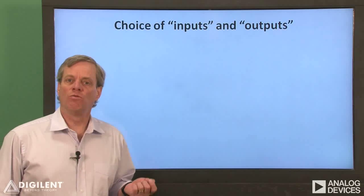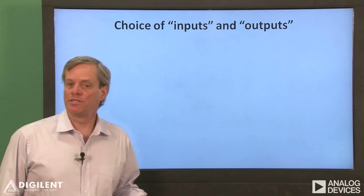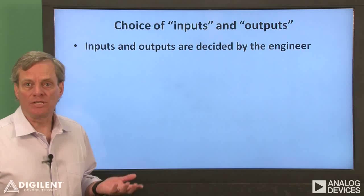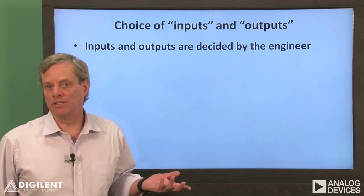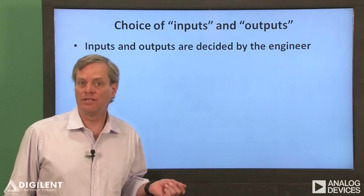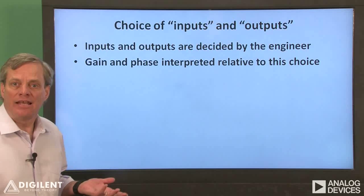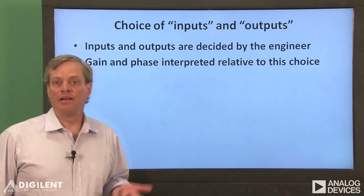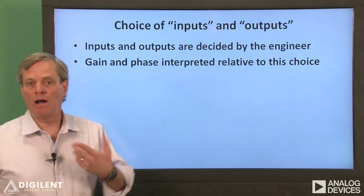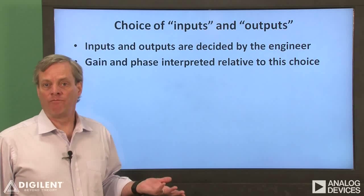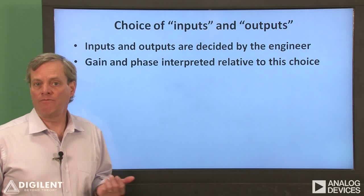Now I want to talk about choosing what we consider to be our input and what is our output. In general, since all signals in the circuit will be sinusoids, we can identify any signal as the input and any other signal as the output. Designating one signal to be the input and another to be the output simply tells us how to interpret the terms gain and phase. If we swap our definition, we simply invert the gain and change the sign on our phase.